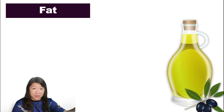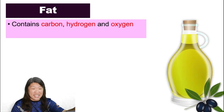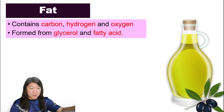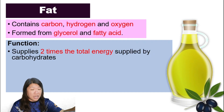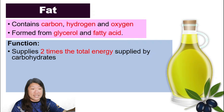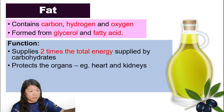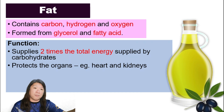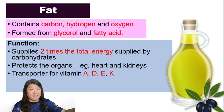Next, the third class — fat. Fat contains carbon, hydrogen, and oxygen, the same elements as carbohydrate, but it is formed from glycerol and fatty acid. The function of fat is just like carbohydrate — it supplies energy. But it supplies two times the total energy supplied by carbohydrates. It also protects organs such as the heart and kidney, and it is the transporter of vitamins A, D, E, and K.